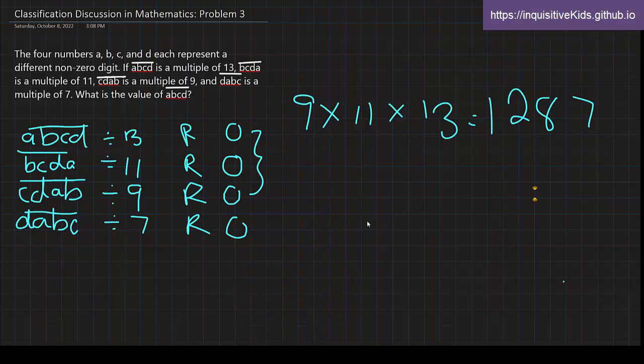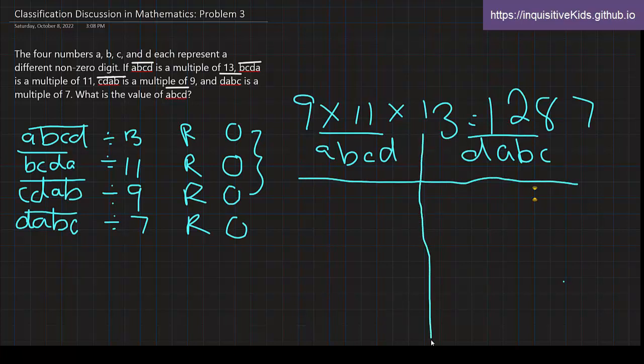So if ABCD, now we're just going to list down the different multiples of 1,287. I'm going to make a chart here because I don't want to repeat a lot of things I'm writing. So these two values, what are their different possibilities?